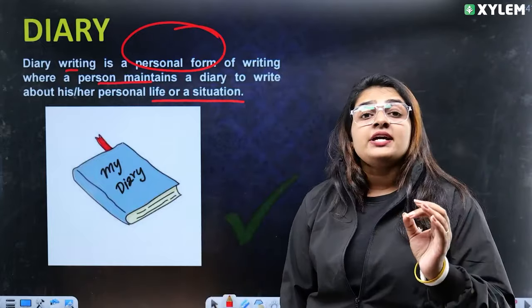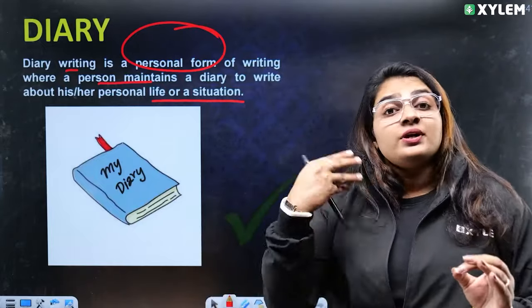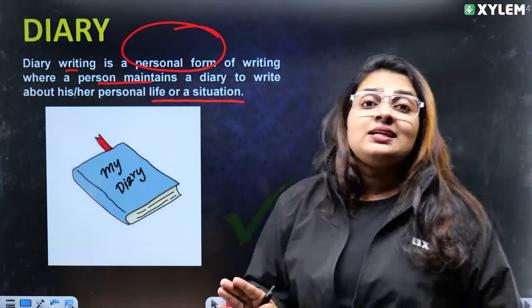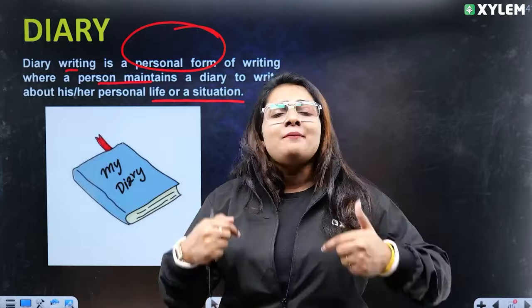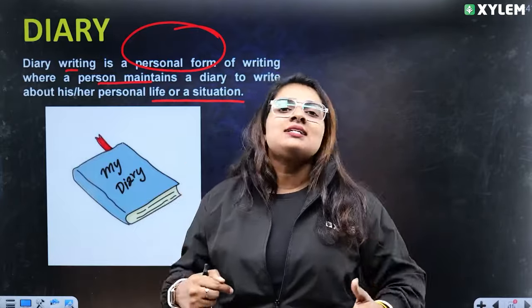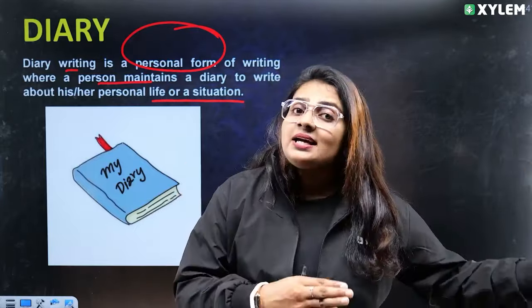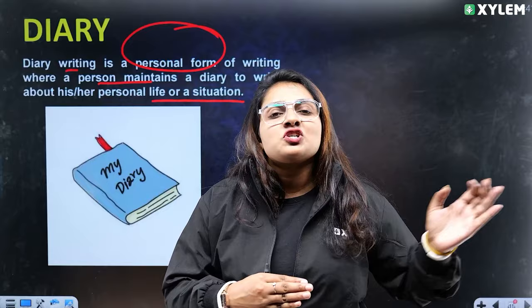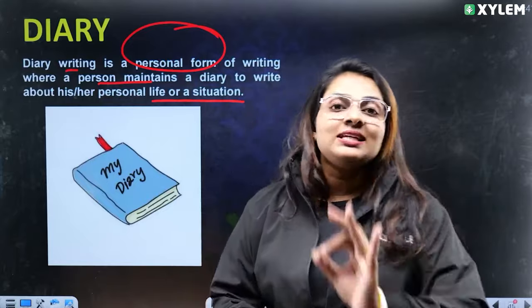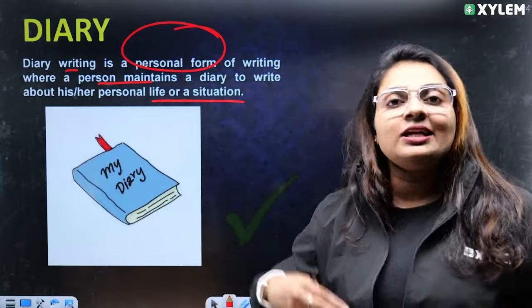So if we assume that the character is a character, we assume that we are the character writer. When you are relating to the situation, you don't want to know what's happening.